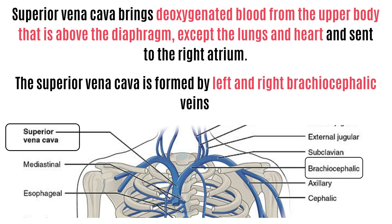The superior vena cava drains deoxygenated blood from the upper body, that is above the diaphragm, except the lungs and heart, and sends it to the right atrium. The superior vena cava is formed by the left and right brachiocephalic veins and it travels inferiorly through the thoracic area before draining into the upper part of the right atrium.